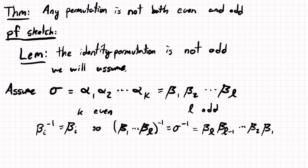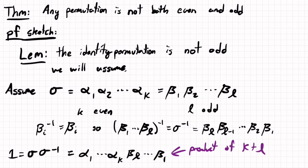Now I'll write down sigma times sigma inverse, which is the identity. I'll write the first sigma as alpha 1 to alpha k, and the second sigma as beta l down to beta 1. But this is a product of k plus l cycles. And k plus l, being an even plus an odd, is odd. So that's a contradiction, and because of the contradiction, the theorem is proved.